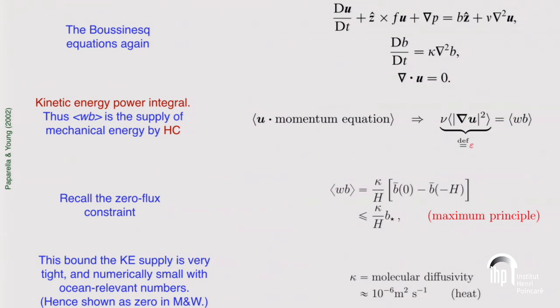This is why Wunsch and Ferrari show zero as the energy source due to convection.